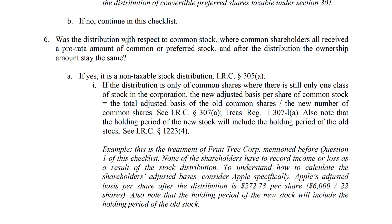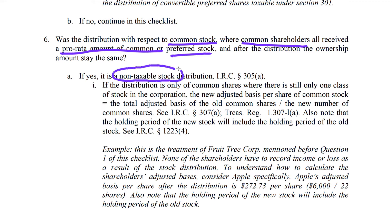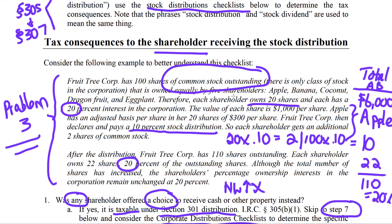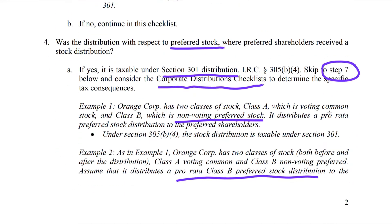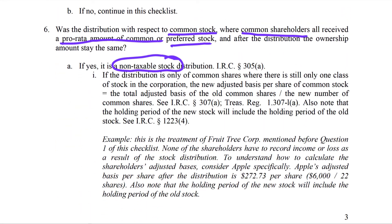Situation six: was the distribution with respect to common stock only, where all common shareholders receive a pro-rata amount of common or preferred stock? If yes, then it's not taxable. This is what we saw in Gross Income Problem 3 and in the Fruit Tree example — common shareholders with 20% ownership before and after, a 10% pro-rata stock distribution. There's no change in value, so it's non-taxable.